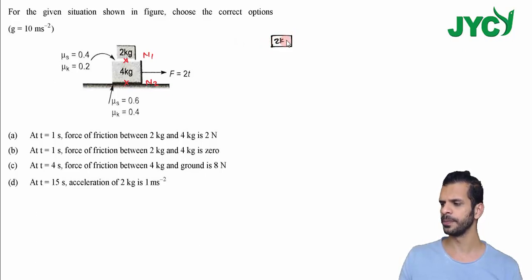So for the 2 kg block, here we have force 2t upward and mg which is 20 downward. Now we have n1 equal to 20.